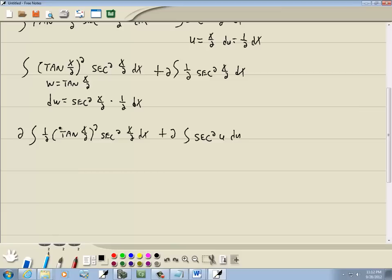Now over here I'm ready to do my substitution. So this becomes w squared and the 1 half secant squared dx becomes dw. Now over in this one the integral of secant squared is tangent. And I'll add on my c.